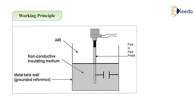Now let us focus on the working principle of the capacitance level measurement system. You can see the diagram here. It has a metal tank which is a grounded reference, a non-conductive insulating medium — this is air — a pipe probe, and these are the plates of the capacitor.